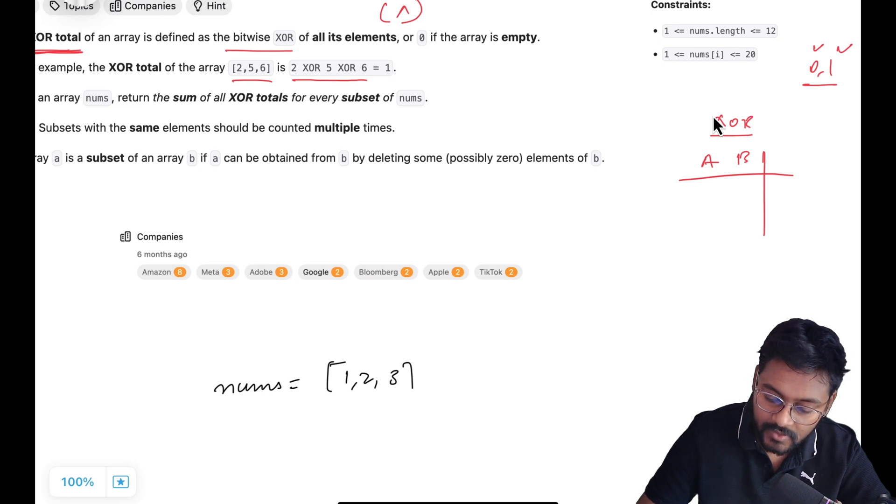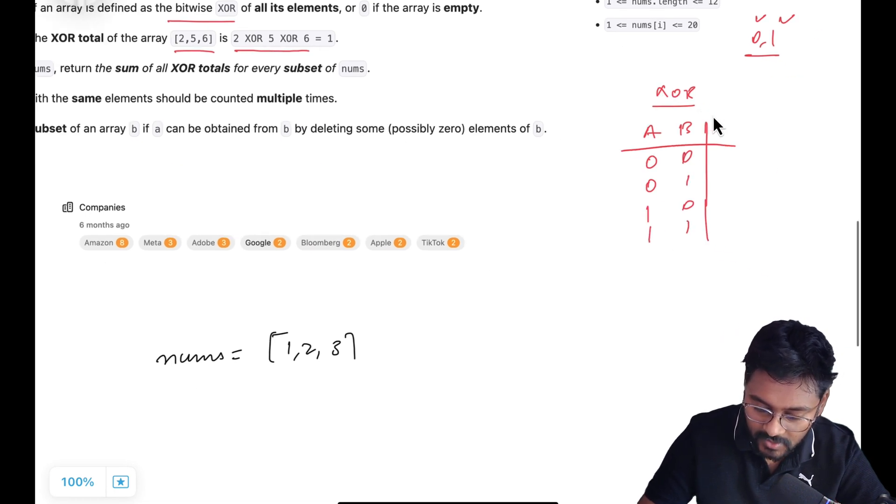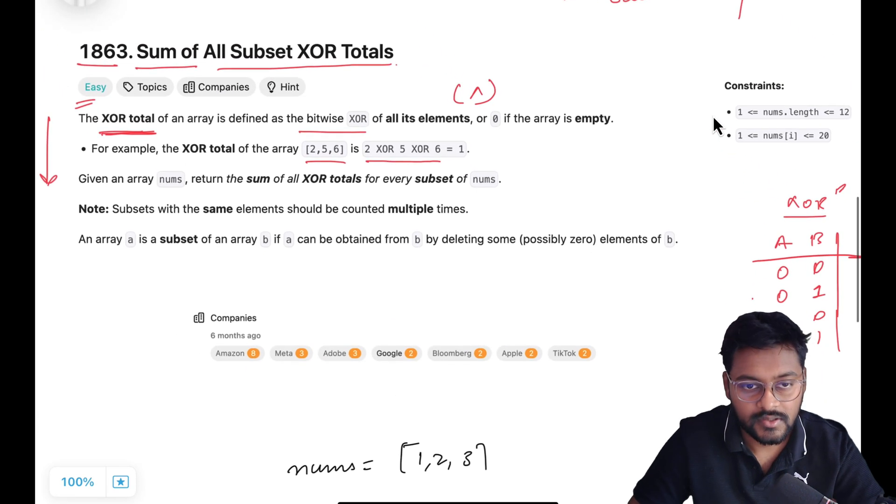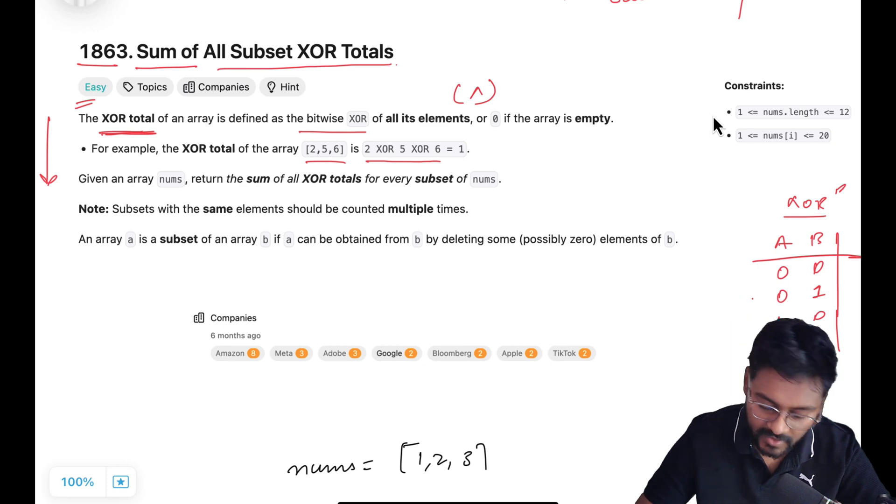So for 2 values we have 2 into 2 possibilities: 0,0 then 0,1 then 1,0 then 1,1. These are the possibilities for XOR and what will be the output? XOR is if 2 values are opposite like this then it is giving 1, otherwise it is giving 0. So this is XOR operator and they are saying XOR total is XOR value of all the elements in the array.